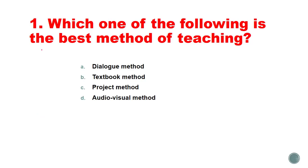Question number one: which one of the following is the best method of teaching? The options are: dialogue method, textbook method, project method, or audio-visual method. We know that active learning is very important. When there are no problems with the child, the school, or the teacher, and safety is not an issue, we talk about active participation — actively learning, especially at the primary level.